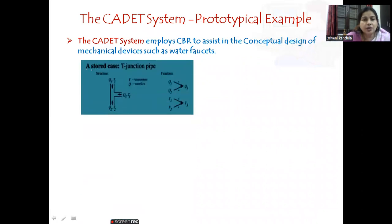Here we already have a stored case which is a T-junction pipe. You can see the structure and the function describing this structure. Q1 is the water flow and T1 is the temperature. Q1, T1, Q2, T2 are given as inputs, and based on that, output Q3 and T3 is provided. Whenever you see a plus symbol on the arrows, that indicates whenever Q1 and Q2 are increasing, Q3 will also increase. Similarly T1 and T2 — a plus sign means when T1 and T2 are increasing, T3 will also increase.